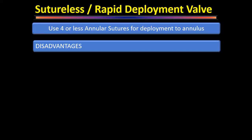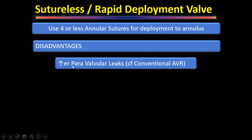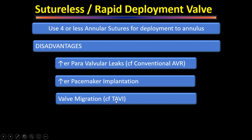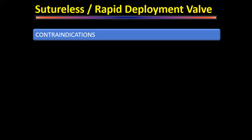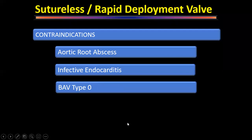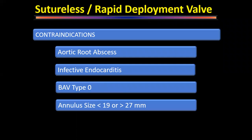Disadvantages of sutureless valves compared to conventional aortic valve replacement: higher incidence of paravalvular leak, higher incidence of pacemaker implantation, and higher chances of valve migration. Possible contraindications include: aortic root abscess (homograft preferred), infective endocarditis, type 0 bicuspid aortic valve with cusp asymmetry, and annular size less than 19 or more than 27 mm. The expert panel consensus recommends proctoring and training as a Class I recommendation before performing these procedures independently.